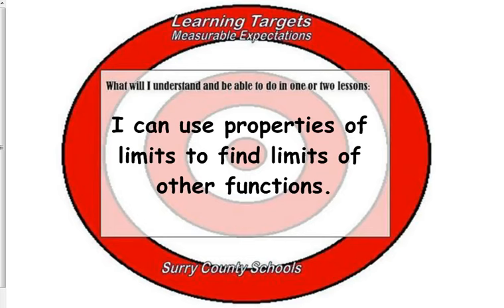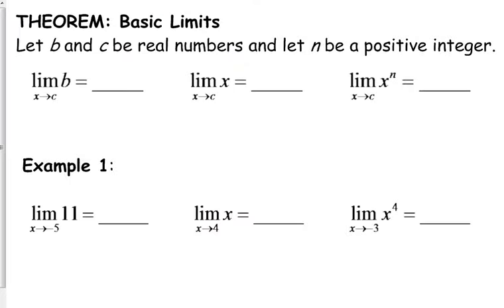We're going to learn some properties of limits so that we can find other limits. Let's start with some basic limits. We've already talked about the first two. B and C are real numbers, they're actual numbers, and N is a positive integer.